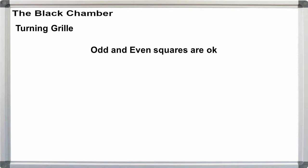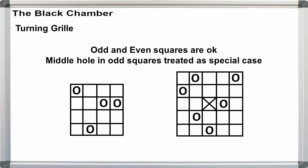We can have an odd-numbered square, but the central hole won't be included in the rotations. By convention, the middle square will be placed in the middle of the plaintext. I'll show what that means in a few minutes.